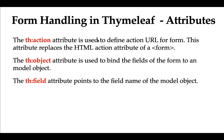Hi everyone, welcome back. In the previous lecture we have seen important Thymeleaf attributes that we use while designing forms in Thymeleaf templates. Here are the important Thymeleaf attributes: th:action, th:object, and th:field. The th:action attribute is used to define the action URL for the form and replaces the HTML action attribute. The th:object attribute is used to bind the fields of the form to the model object, and th:field points to the field name of the model object.